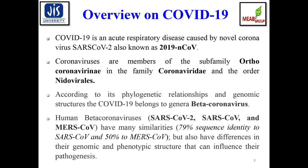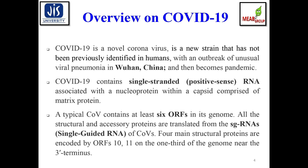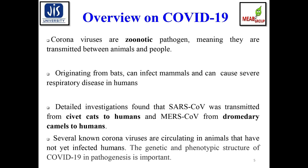COVID-19 is a novel coronavirus strain not previously identified in humans, with an outbreak of unusual viral pneumonia in Wuhan, China, before becoming a pandemic. It contains single-stranded positive-sense RNA associated with nucleoprotein within a capsid comprised of matrix protein. A typical coronavirus contains six ORFs (open reading frames) in its genome; all structural and accessory proteins are translated from subgenomic RNAs.